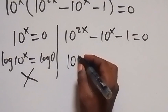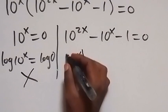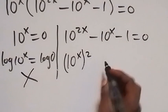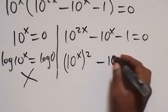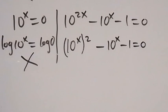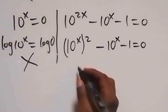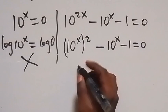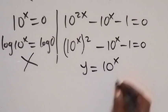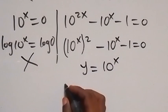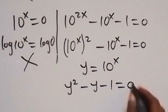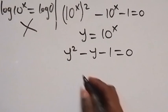Then on this side we can rewrite this: 10 raised to power x, and 10 raised to power 2x — from the law of indices since this power multiplies we can separate it — then we have minus 10 raised to power x, minus 10 raised to power x. From here we have 10 raised to power x common, so we can use a letter to represent that. Let y equal to 10 raised to power x, then we can write the equation.